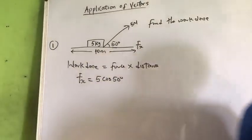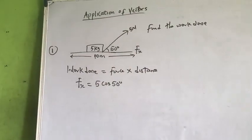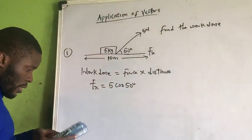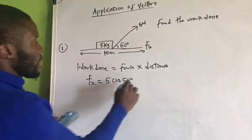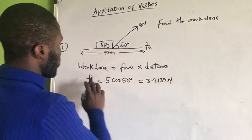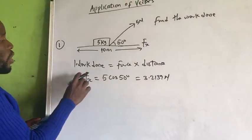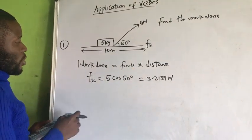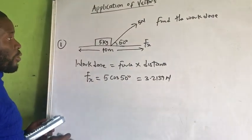Now, what is 5 cos 50 degrees? If we look at 5 cos 50 degrees, that is 5 cos 50. That is 3.2139. 3.2139 newtons. So, that is the force that we are going to use. That is force along the horizontal component of resultant.